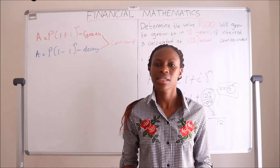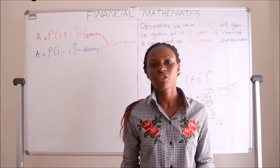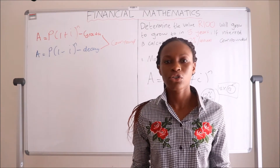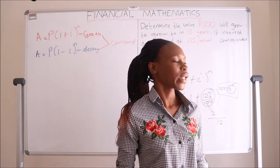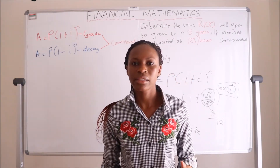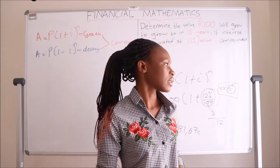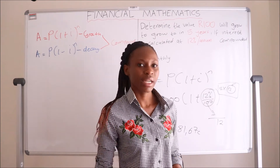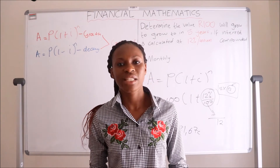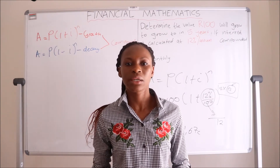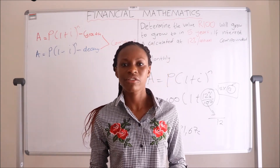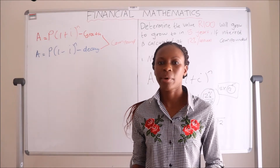If they say semi-annually, which is half a year, we have two semi-annual periods in a year — so the interest rate is divided by 2 and the period is also multiplied by 2. If they say daily, in financial mathematics we assume a year equals 365 days — so the interest rate is divided by 365 and the period is multiplied by 365. If compounded weekly, we assume 52 weeks in a year — divide the interest rate by 52 and multiply the period by 52.